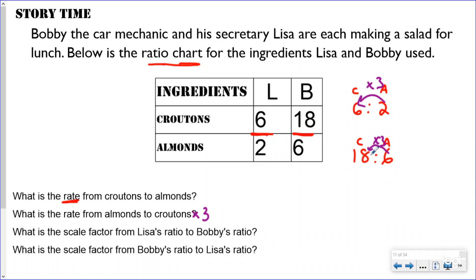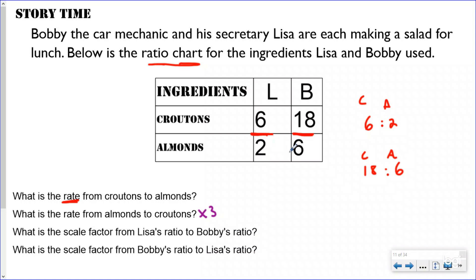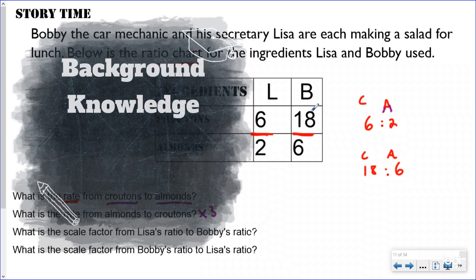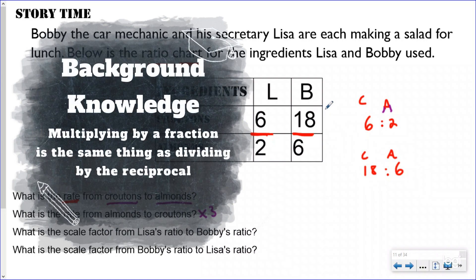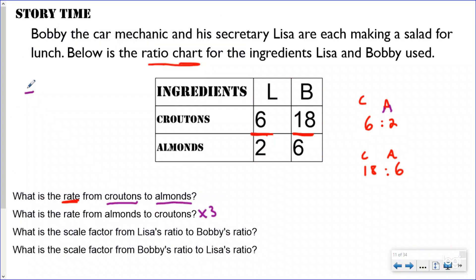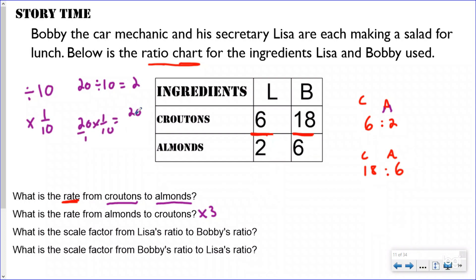Going the other way, the rate from croutons to almonds won't be times three. If you look at the side screen, you'll remember something from fifth grade: dividing by a whole number is the same as multiplying by the reciprocal. For instance, dividing by 10 is the same as multiplying by one-tenth. I can prove it: 20 divided by 10 equals 2, and 20 times one-tenth gives 20 over 10, which is still 2.